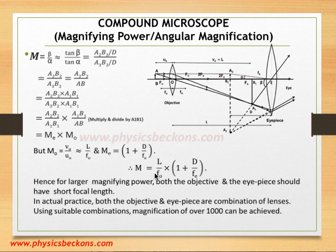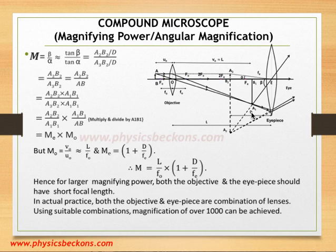In this expression, both FO and FE occur in the denominators. So if the focal lengths are short or small, the magnification achieved will be larger. Hence, in the construction we emphasize that both the objective and the eyepiece should have short focal lengths. This diagram of the compound microscope only outlines the principle of magnification. In actual practice, the objective is a combination of lenses, and similarly the eyepiece is also a combination of lenses. Using suitable combinations, we can get magnification of over 1000 from a compound microscope.